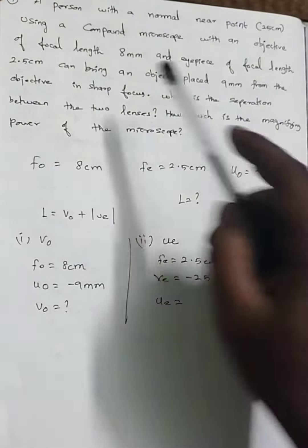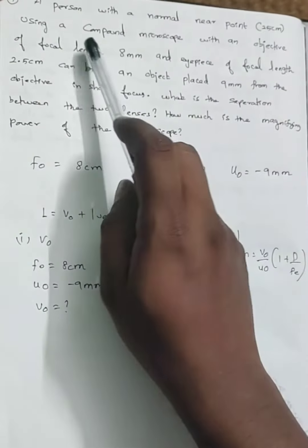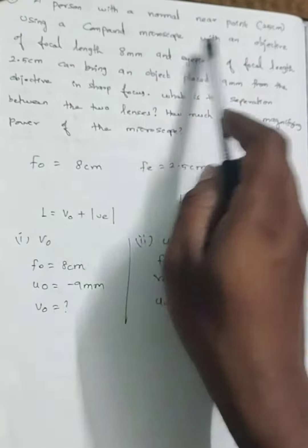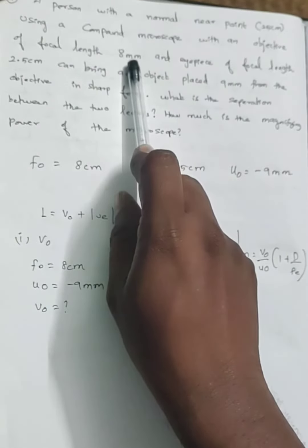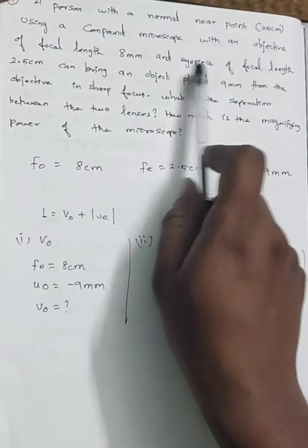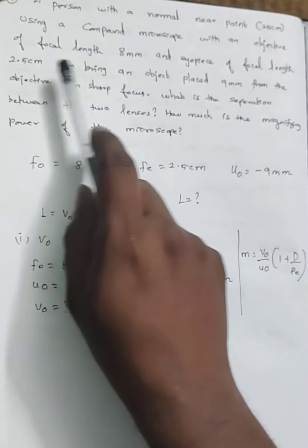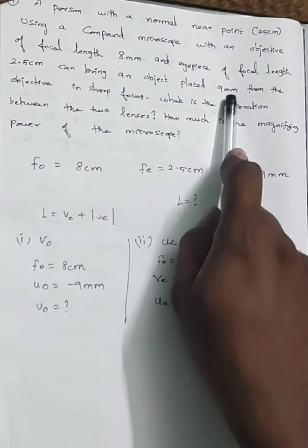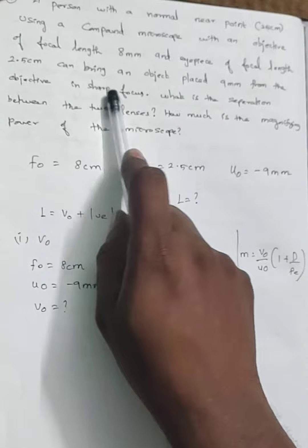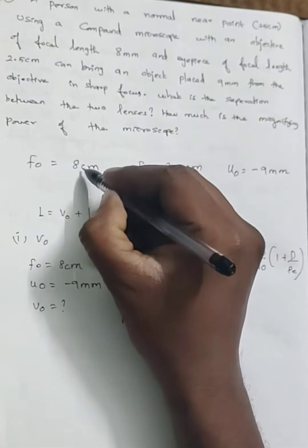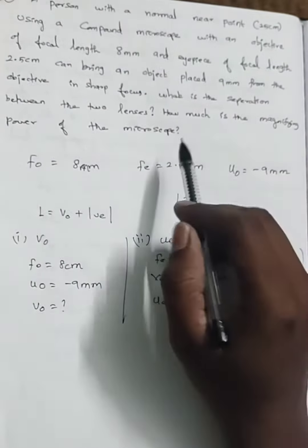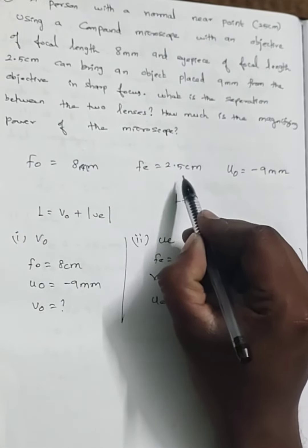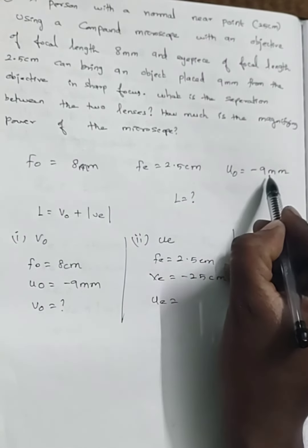Alright guys, question number 7. A person with normal near point using a compound microscope with an objective of focal length 8 millimeter and an eyepiece of focal length 2.5 centimeter. An object is placed 9 millimeter from the objective. So that means F0 is 8 millimeter, Fe is 2.5 centimeter, and U0 is minus 9 millimeter.